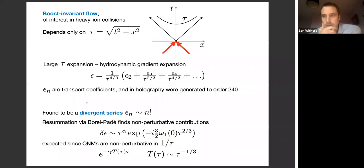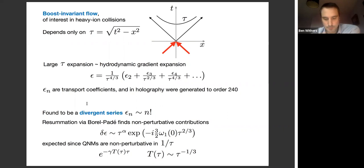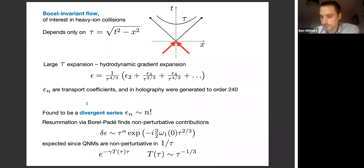This was for a long time the only work—at least that I was aware of—looking at the large-order behavior of hydrodynamics in holography, and the answer was a divergent result. So for a long time it was said that this expansion was divergent. Now let's turn to dispersion relations, based on a paper from 2018.